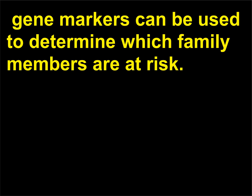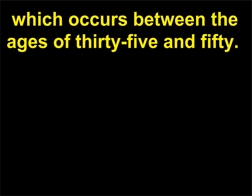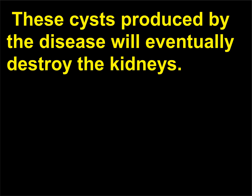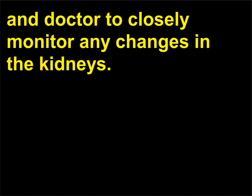If the locus of the disease-causing gene is known, gene markers can be used to determine which family members are at risk. An example of an adult-onset genetic disorder is polycystic kidney disease, which occurs between the ages of 35 and 50. These cysts produced by the disease will eventually destroy the kidneys. Prior knowledge of the condition allows both patient and doctor to closely monitor any changes in the kidneys.